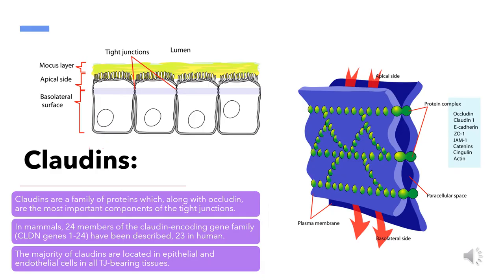Claudins represent an extended family of transmembrane proteins with 23 family members in humans. Their isoform expression depends on the tissue and developmental stage. In cells, they are situated close to the apical membrane where they work together with occludins.